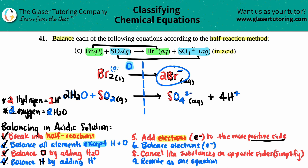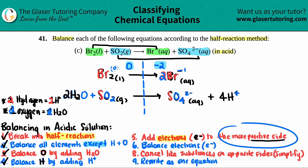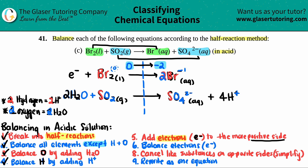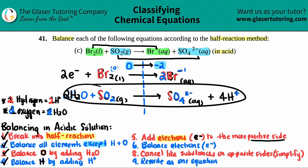On the right side of the top half reaction, the charge is −1 and there are two Br⁻, so the overall charge is −2. Comparing zero versus −2: zero is more positive, so I add electrons to the left side. To go from zero to −2 on the number line is two steps, so I add two electrons to the left side of the top half reaction.